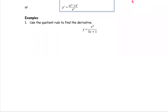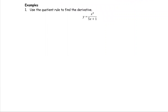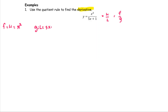Let's look at an example. We're going to use the quotient rule to find the derivative of the function y. We'll name the top as the high and the bottom as the low — or you can use f and g. The f or high function is x squared, and the g or low function is 5x plus 1.